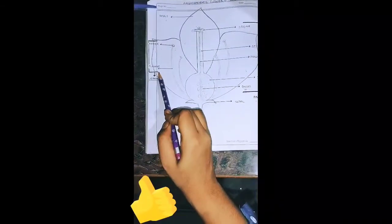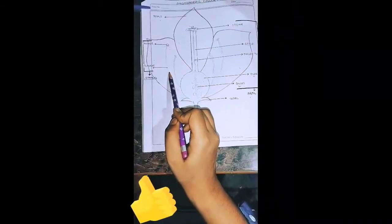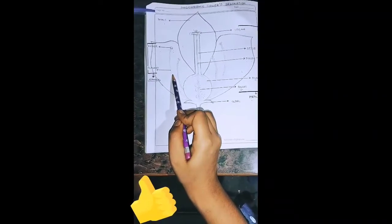And filament is a tube-like structure which supports the anther.